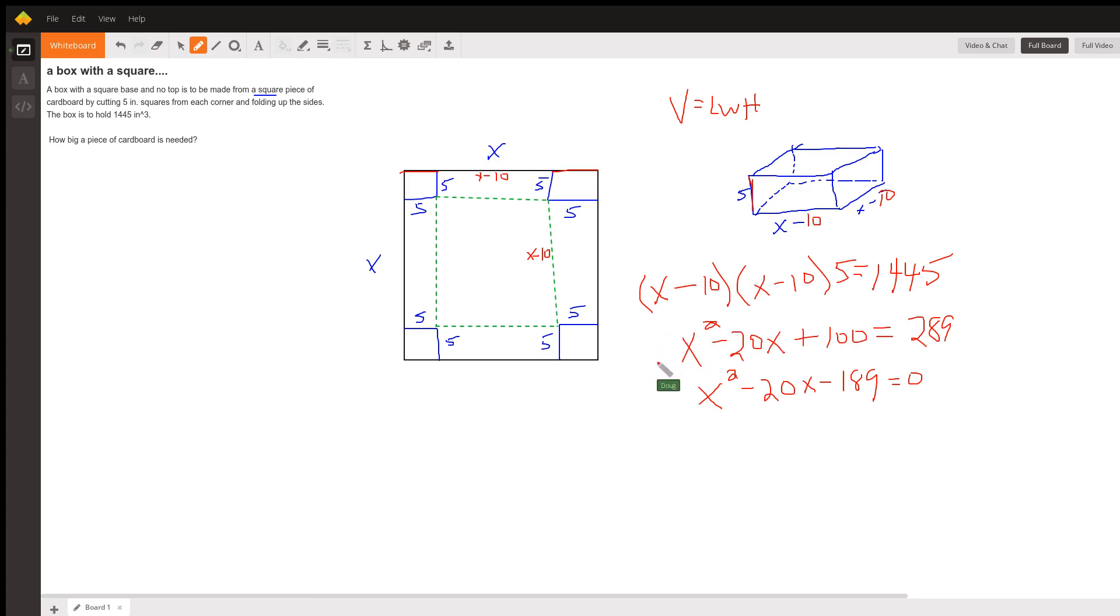Instead of doing all this, why didn't we just go X minus 10, the quantity squared, equals 289.